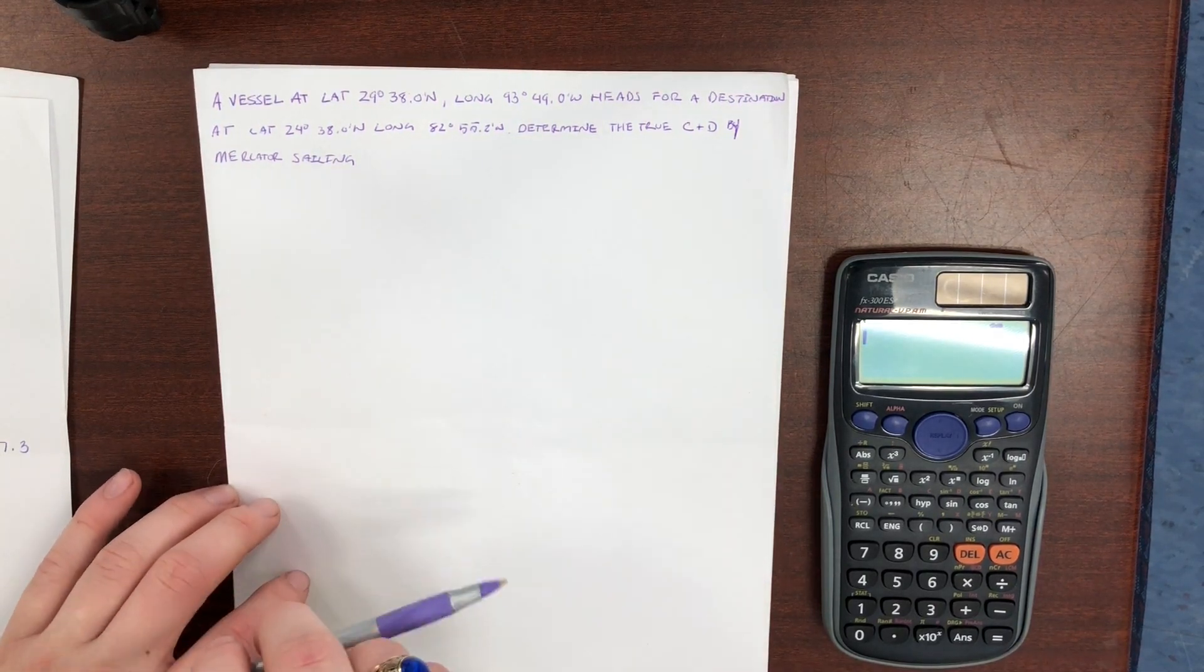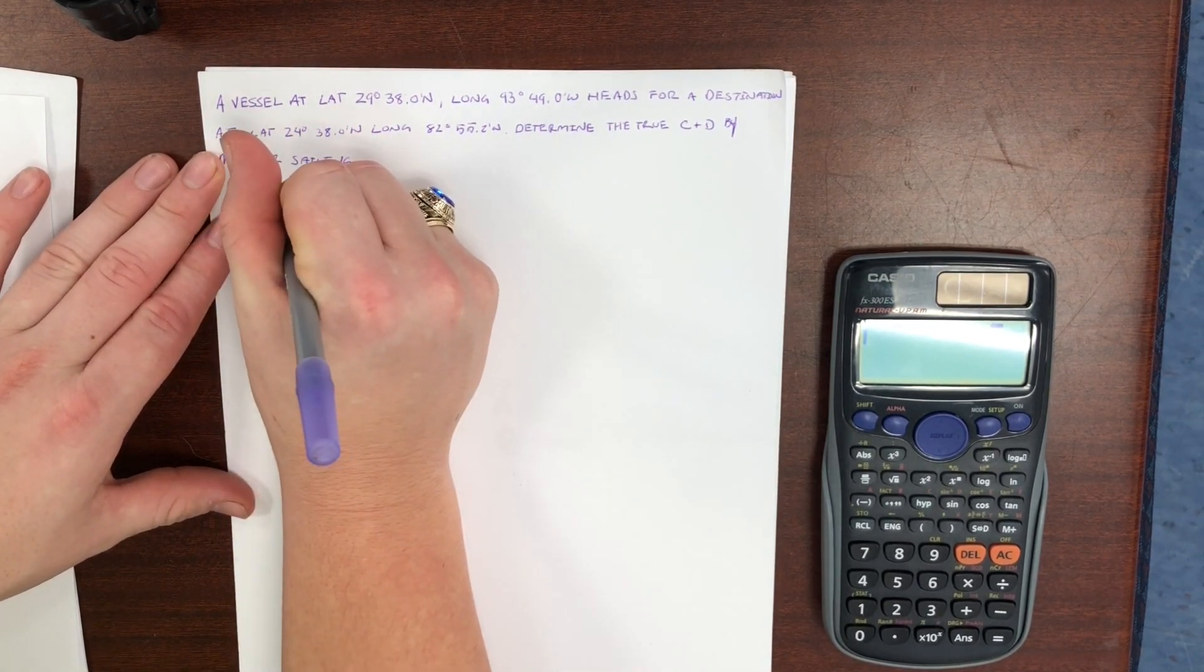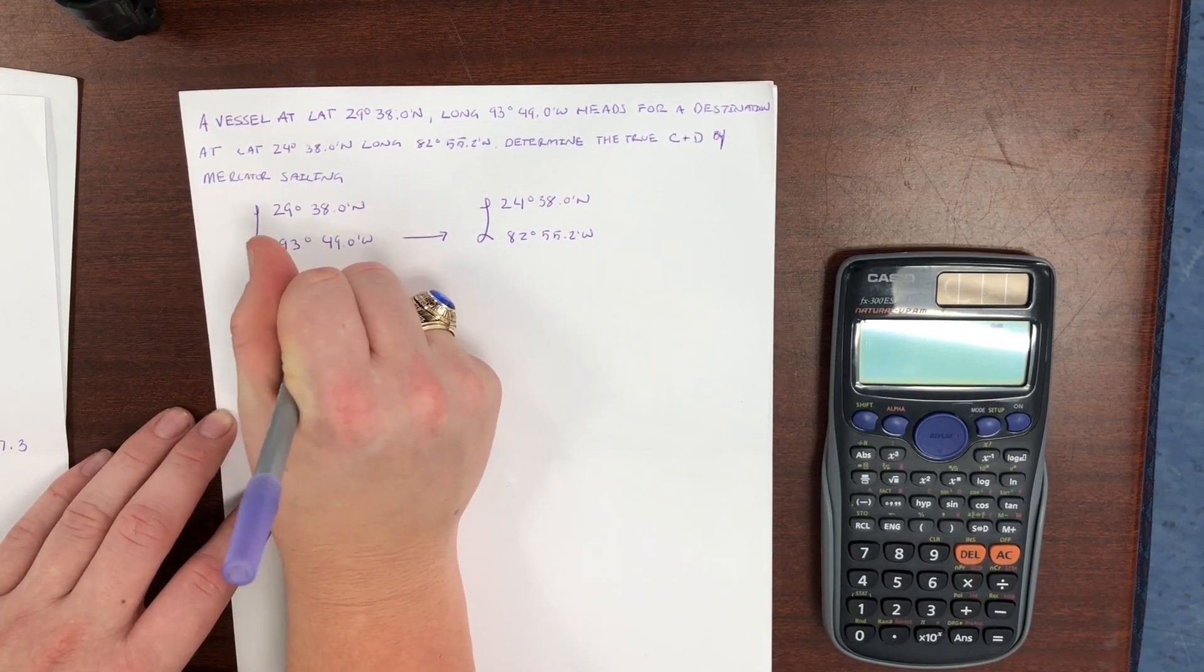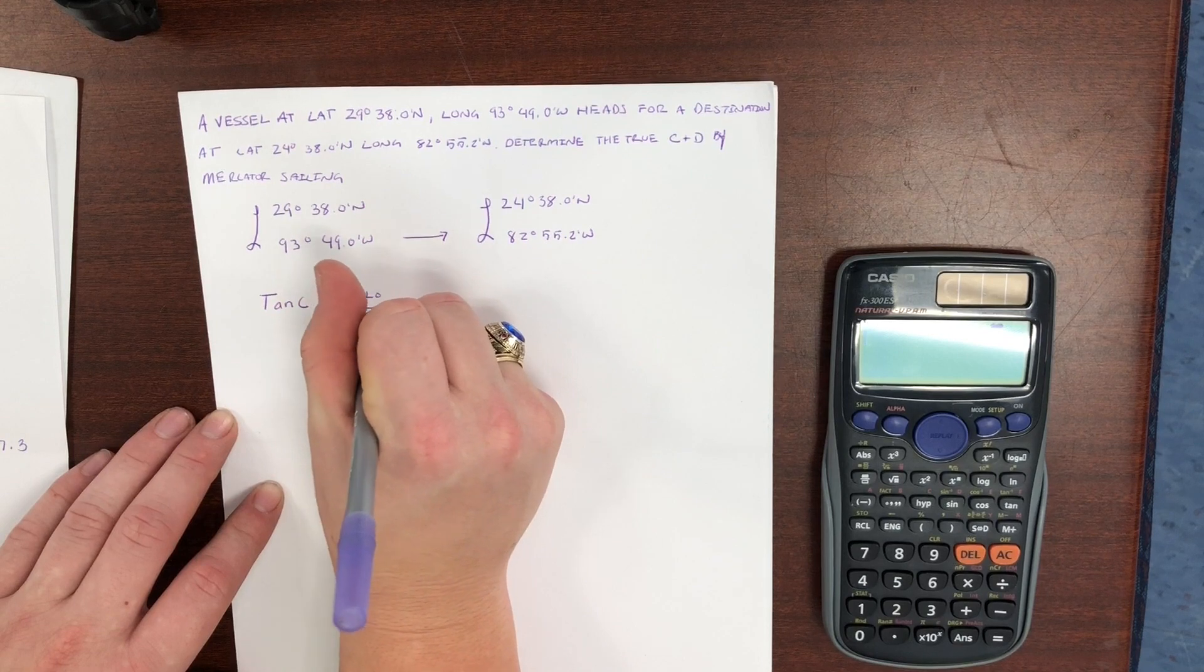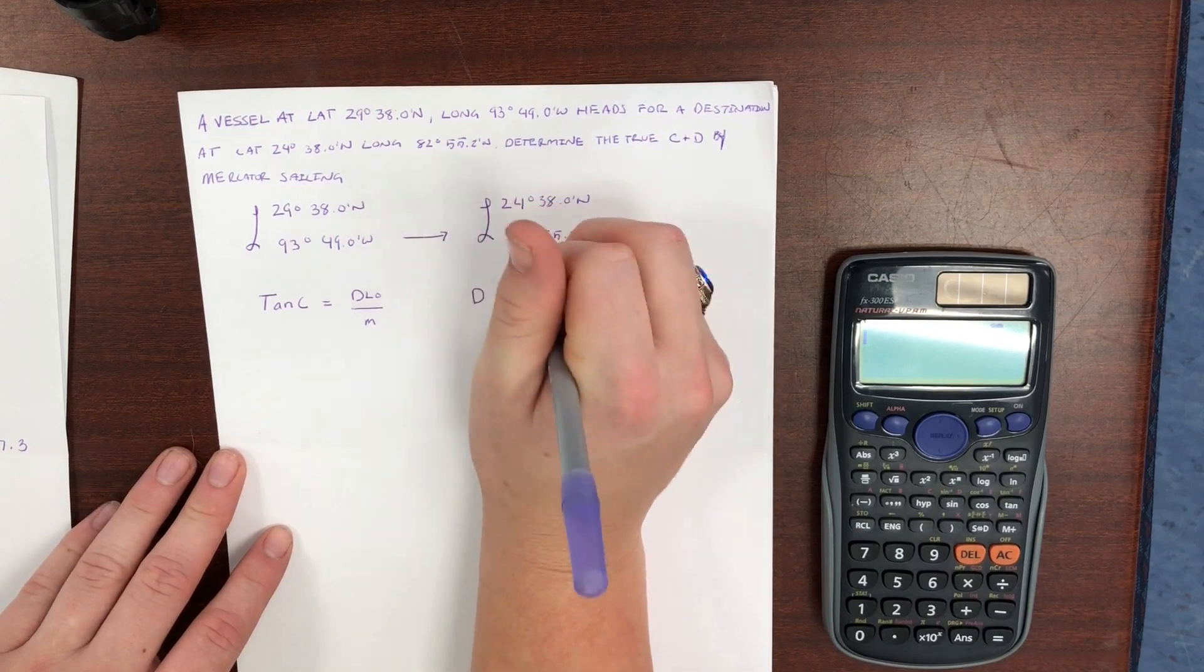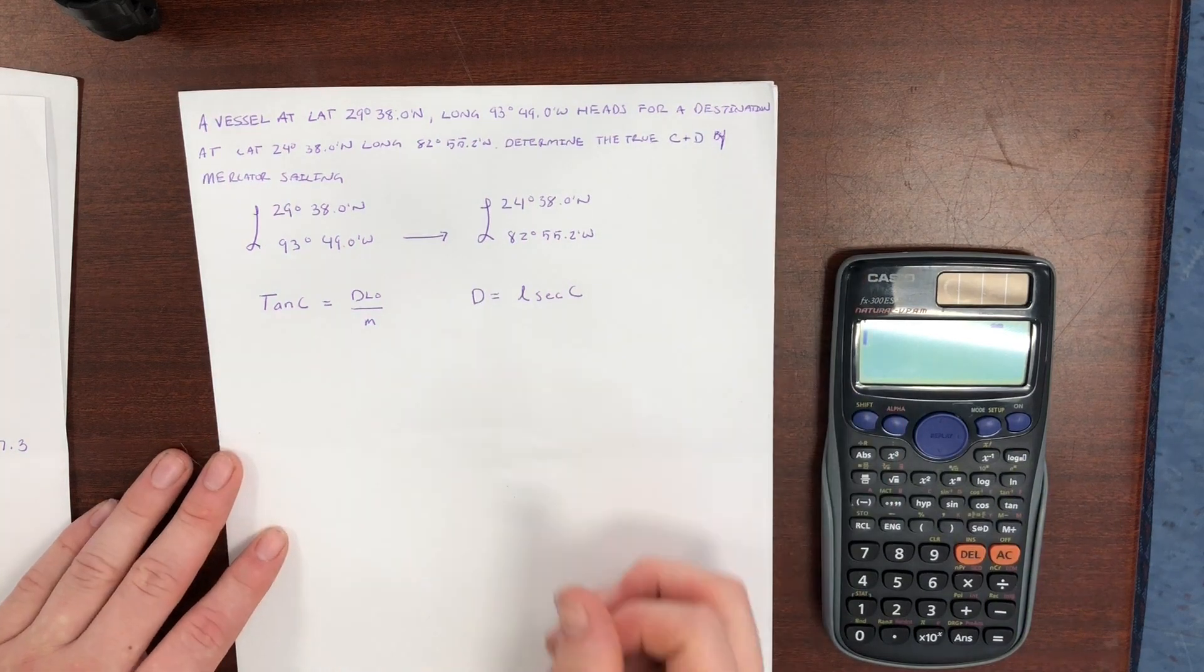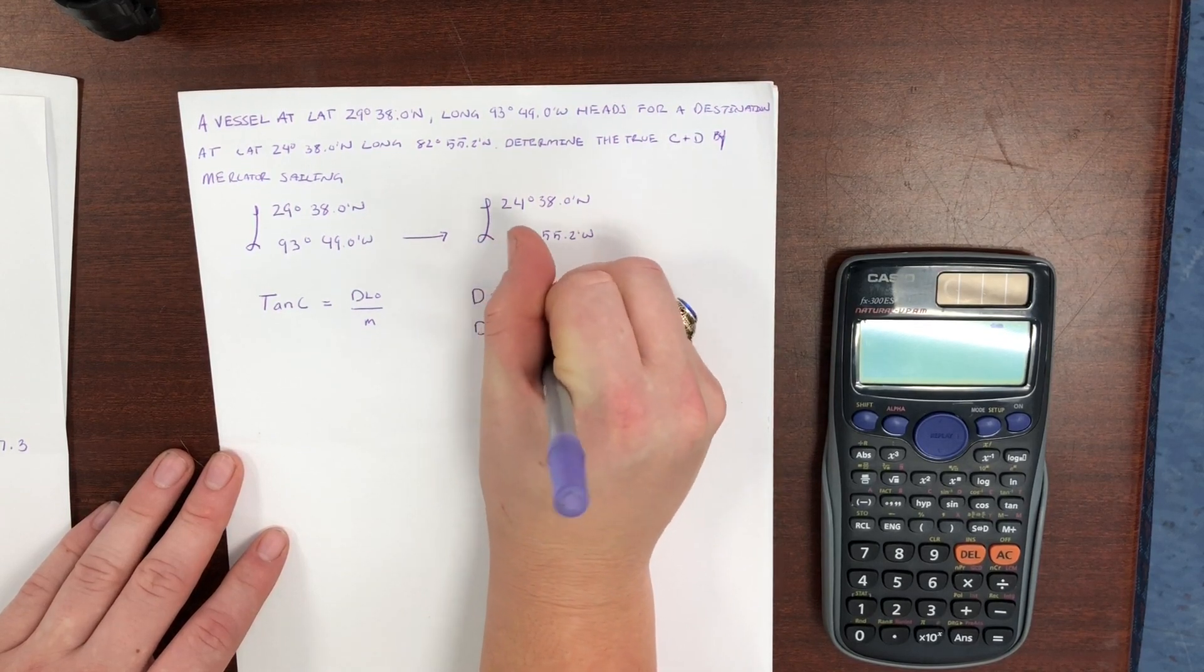So the first thing that we can do is mark down our information, and that is our latitudes and longitudes. The next thing we can do is list our formulas. In a Mercator Sailing, we are using two formulas. The first one to find our course is the tangent of C equals DLO, difference of longitude, over m, little m. The next formula is used to find our distance, which is D equals the change of latitude times the secant of C, otherwise known as D equals change of latitude over cos C.